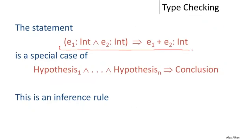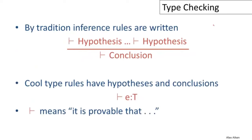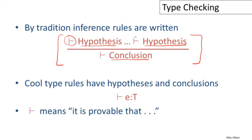The turnstile symbol (⊢) is read 'it is provable that.' So the rule says: if it is provable that all hypotheses above the line are true, then it is provable that the conclusion below is true. Cool type rules prove that some expression has a particular type. For example: integer literal I has no hypotheses, so we can immediately conclude ⊢ I : Int. And for addition: ⊢ E1 : Int and ⊢ E2 : Int together imply ⊢ E1 + E2 : Int.